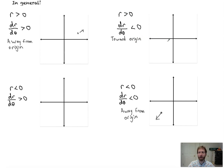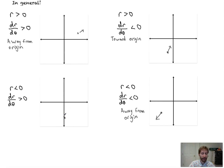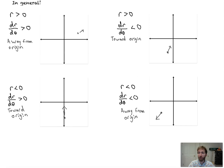Let's pick another positive r value at four pi over three — that's down here roughly. That's a positive r value. If dr/dθ is negative, that means we're moving in the opposite direction of four pi over three, so we'd be moving back toward the origin. One more: if r is less than zero at pi over two, we're in the opposite direction of pi over two, so we'd be down here. But if dr/dθ is greater than zero, we're moving in the direction of the angle, which is back toward the origin. Opposite signs: toward the origin. Same signs: away from the origin.